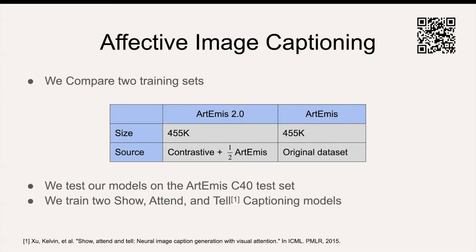We use the task of affective image captioning as a practical application to show the advantages of using Artemis 2. To this end, we trained two Show, Attend and Tell models: one trained on Artemis 2, while the other is trained on the original dataset. For testing, we use a subset of the original dataset called Artemis C40, which has 40 captions per image. Thus, it has better coverage of emotional experiences, and it has no new collected samples, so it guarantees fair comparison.